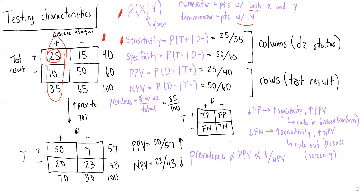Specificity is the probability of getting a negative test result given you do not have the disease — so in this case, it would be 50 over 65. We can see that both sensitivity and specificity are dependent upon disease status, so when thinking of the denominator, it's going to be those with disease for sensitivity or those without disease for specificity.